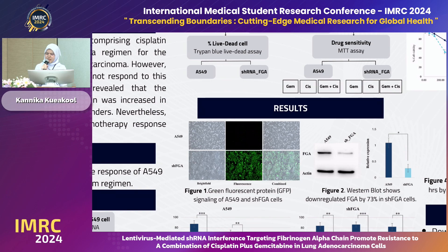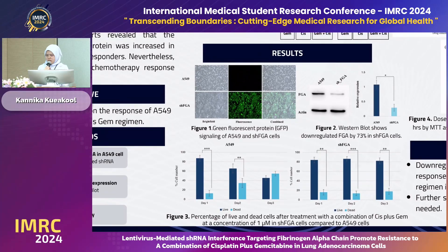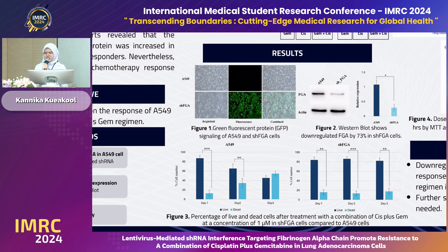The result in Figure 1 shows the GFP signaling, which shows the signal clearly in shFGA cells. This result was used to confirm the successful stable suppression of FGA. Figure 2 shows that FGA protein expression was significantly downregulated in shFGA cells by approximately 73 percent.